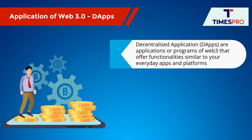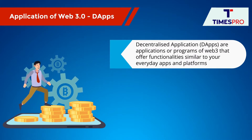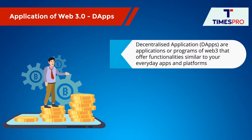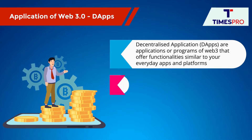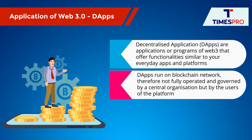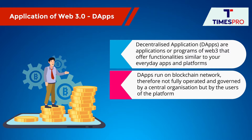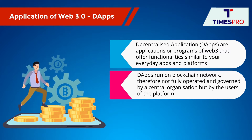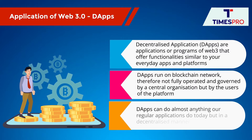Decentralized apps, also known as D-apps, are applications or programs of Web3 that offer functionalities similar to your everyday apps and platforms, but differ from them in the fact that D-apps run on blockchain networks. And as blockchains are decentralized networks, it means that D-apps are not fully operated and governed by a central organization but by the users of the platform. So, D-apps can do almost anything our regular applications do but in a decentralized manner.